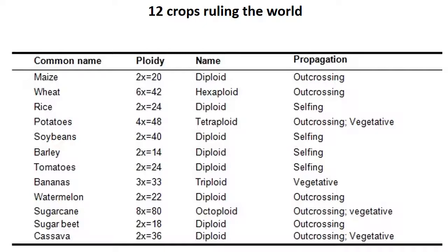Potato is out-crossing and a vegetative crop. Soybean is diploid with 2n = 40, self-pollinated. Barley has 14 chromosome number, diploid, self-pollinated. Tomato is 2n = 24, diploid, self-pollinated. Banana has 33 chromosome number, diploid, and is vegetatively propagated. Watermelon is 2n = 22.